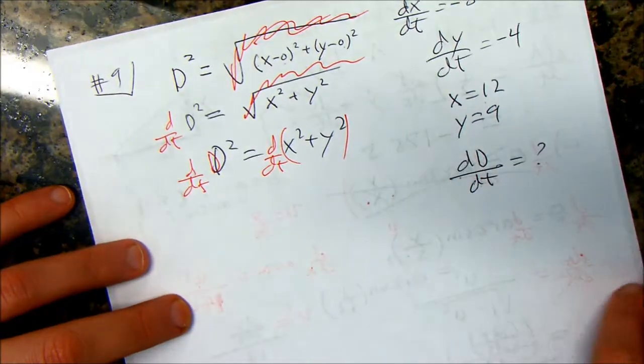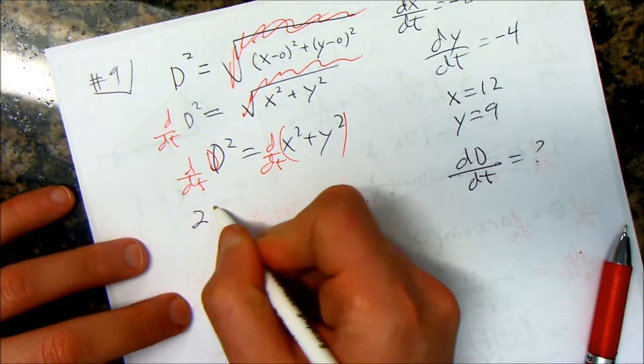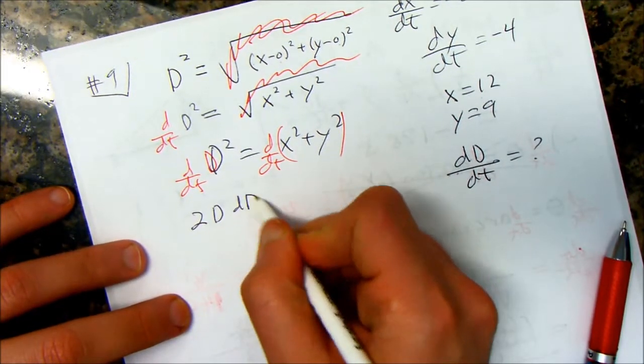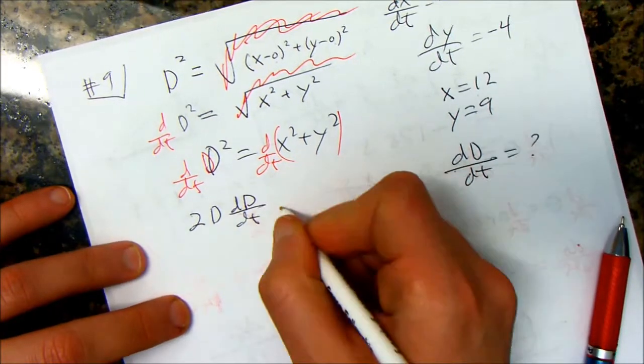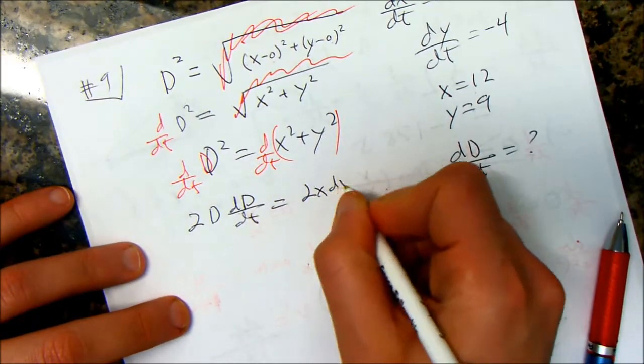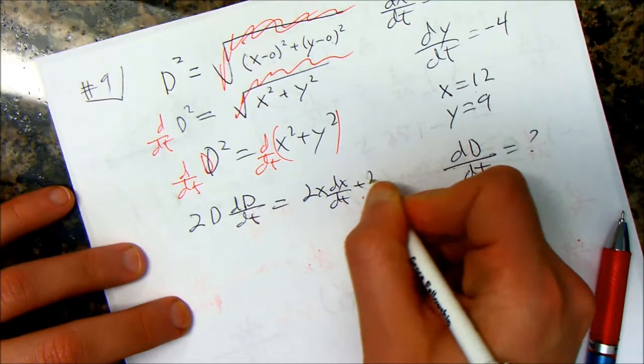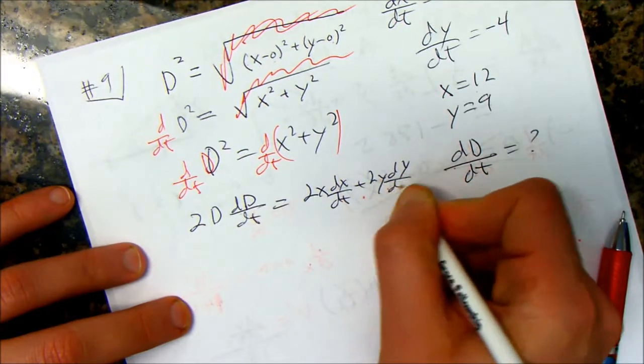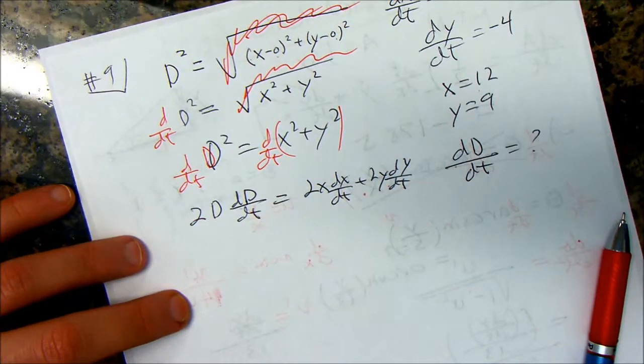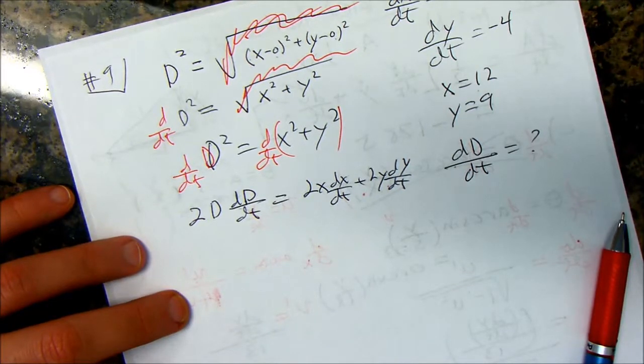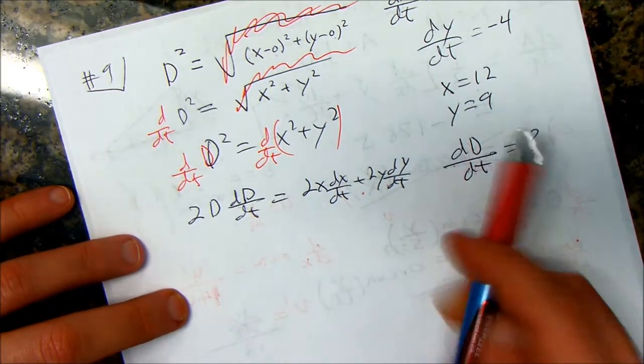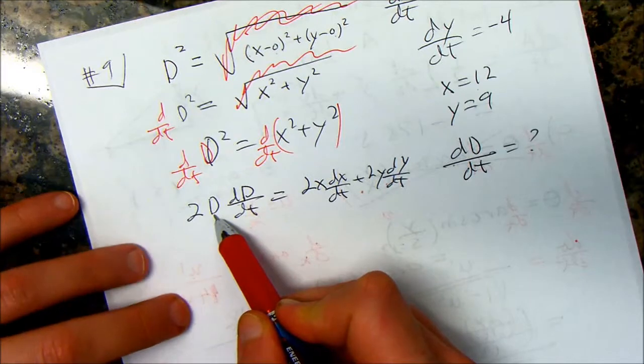Again, how you write it can really change everything. So, d/dt on both sides. So I get, chain rule, 2D times dD/dt equals 2x times dx/dt plus 2y times dy/dt. And we have everything, right, except this D right here.